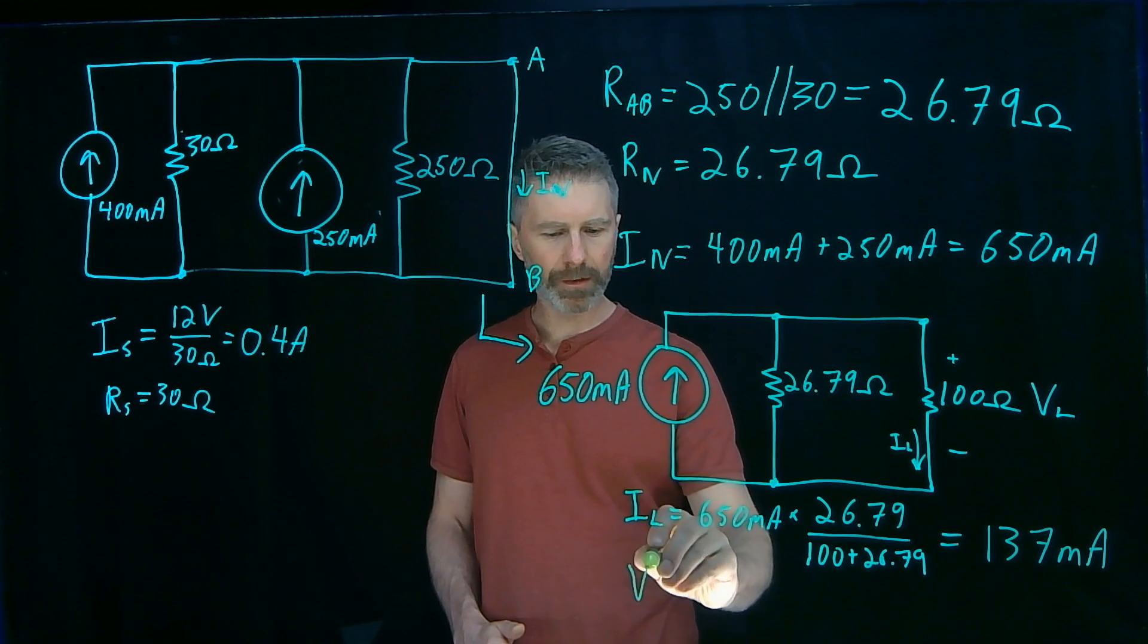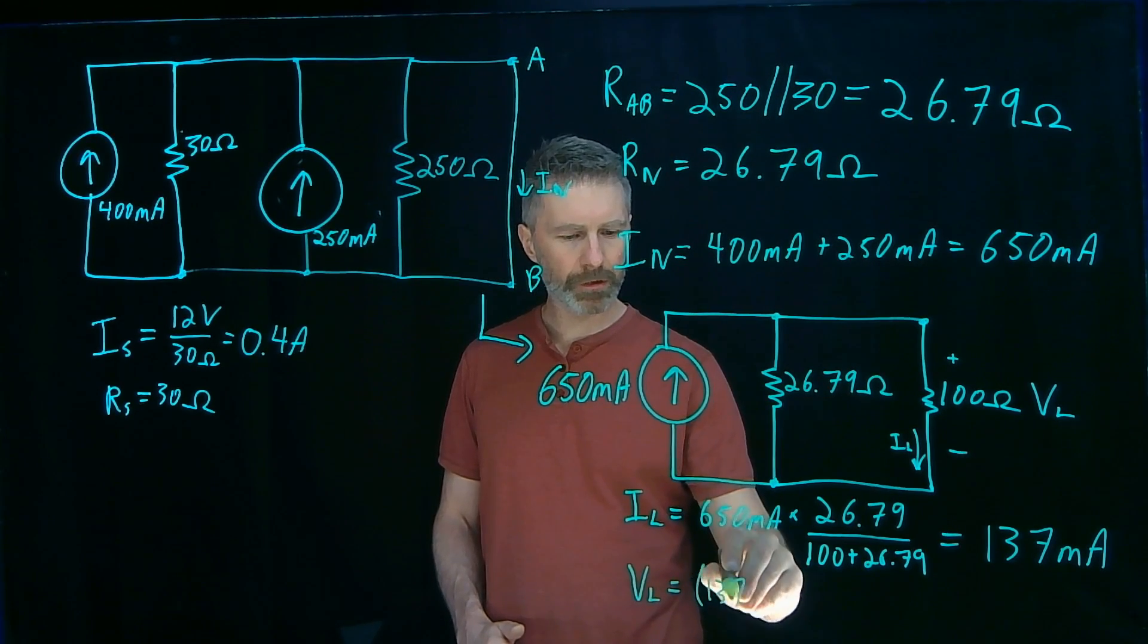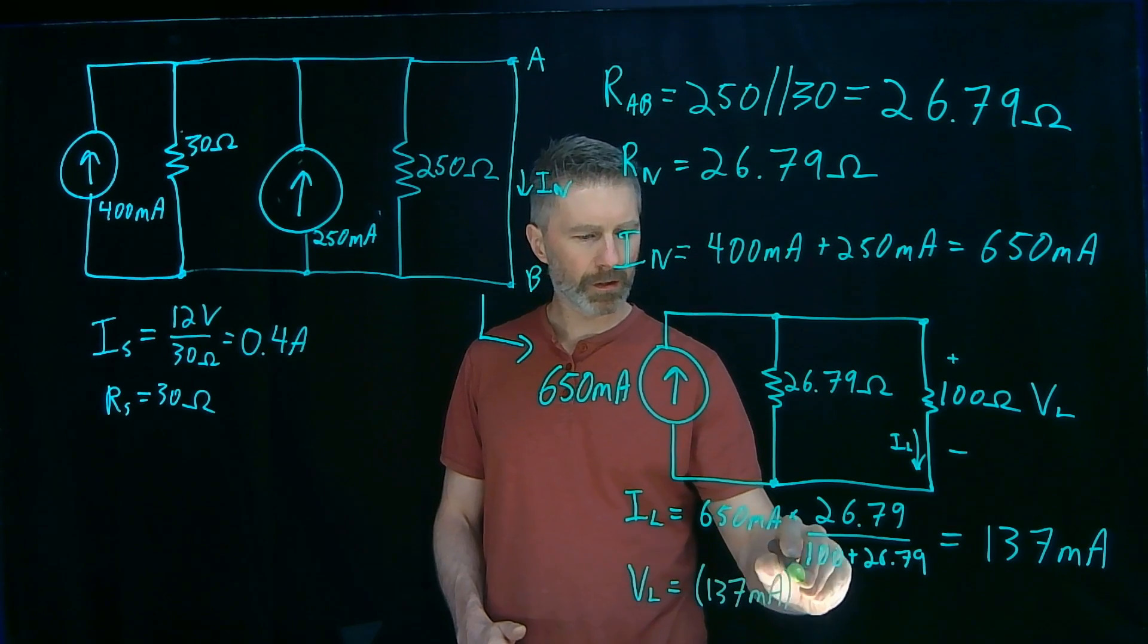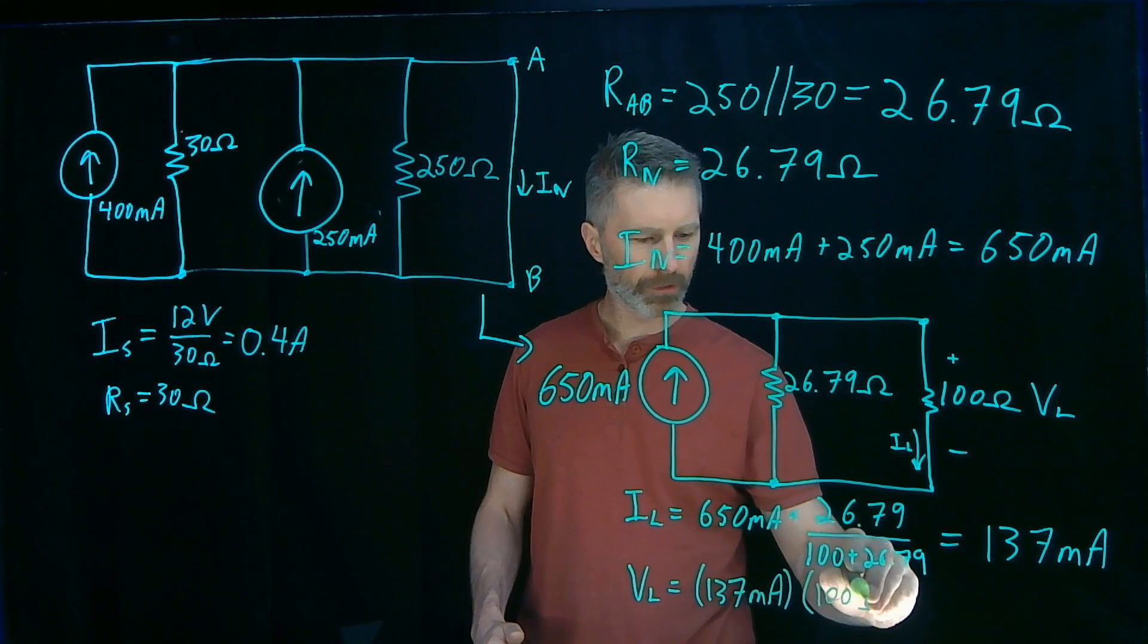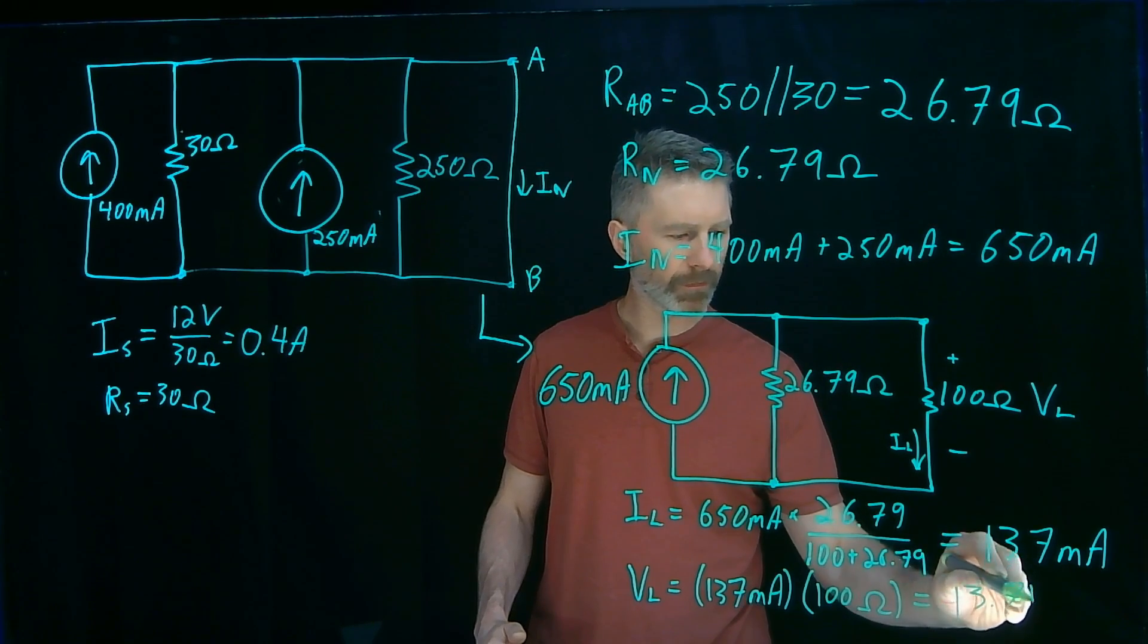And that works out to 137 milliamps. And the voltage across the load, again, very simple to calculate. That will be the current through the load, 137 milliamps times the resistance of it, 100 ohms. And that works out to 13.7 volts.